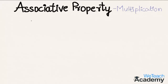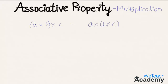Associative property on multiplication states that if we wish to multiply two or more numbers, it doesn't matter how we group them. We may group them in different ways but both products will be equal. Let me explain this concept with an example.